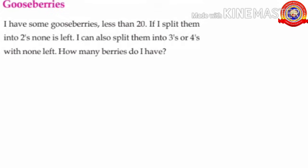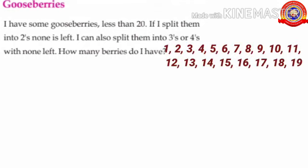Children, listen to the next question. Gooseberries. I have some gooseberries less than 20. If I split them into 2s, none is left. I can also split them into 3s or 4s with none left. How many berries do I have? Children, which are the numbers less than 20? Yes, 1 to 19. If she split the gooseberries into 2s, 3s or 4s and no one is left, that means the number of gooseberries are the common multiple of 2, 3 and 4.